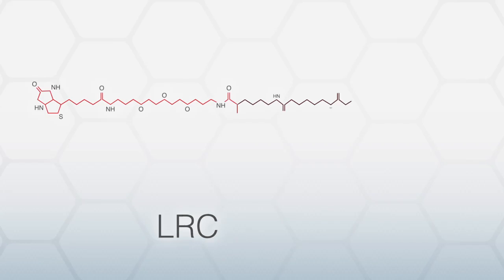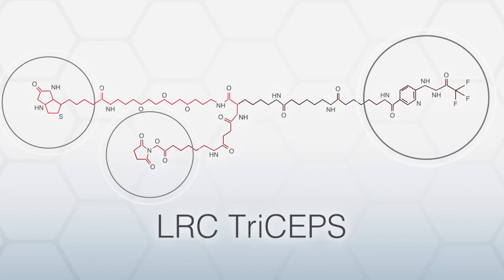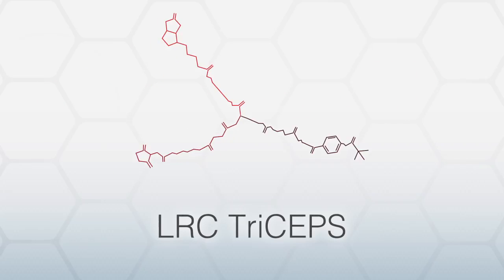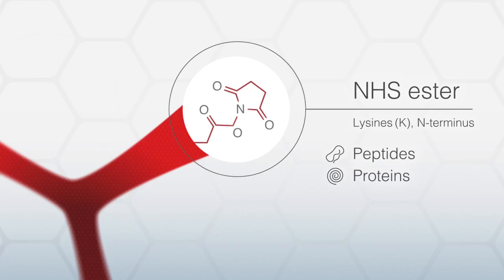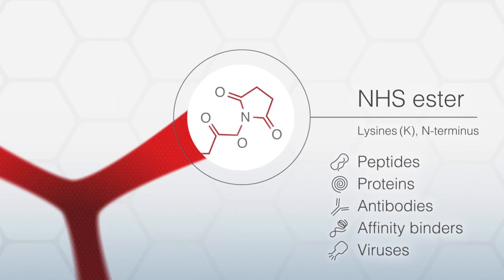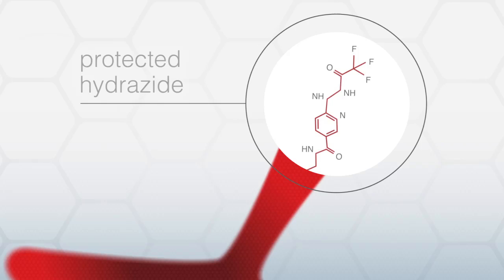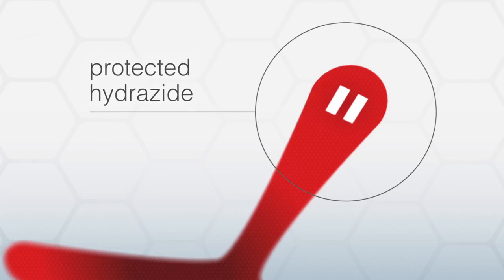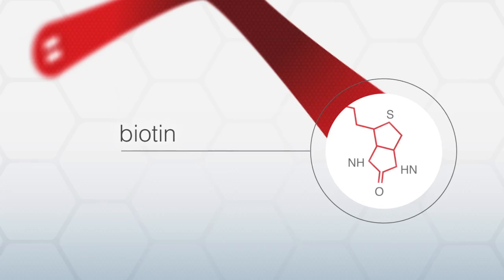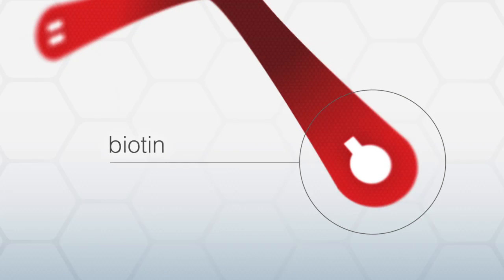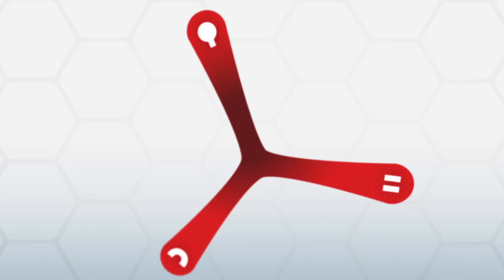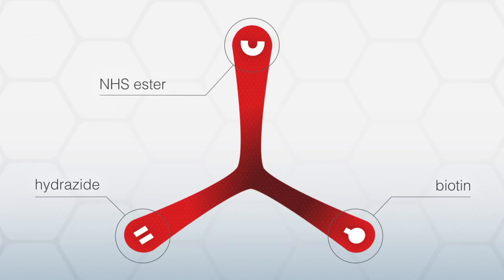Essential for an LRC experiment is a new and proprietary reagent. Triceps has three functionalities: the NHS function to couple any ligand that contains primary amines, a protected hydrozide which covalently binds glycosylated receptors, and a biotin group for specific and sensitive enrichment of triceps-coupled glycopeptides. Et voila! That's how we find the receptor of your orphan ligand.